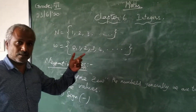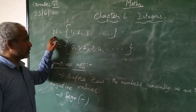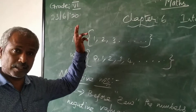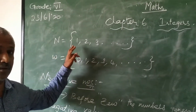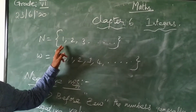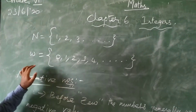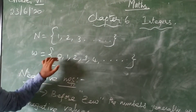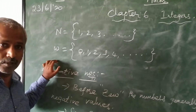Before that, you are all very familiar about the natural numbers. In whole numbers itself, I explained that. The natural numbers start from 1, 2, 3, and so on. Whole numbers means natural numbers included with 0 — that set will be called as whole numbers.